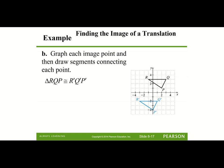Here you can see the image has been graphed. P prime at (0, −4) is right there. Q prime at (1, −2) — the vertex is right there. And R prime at (−3, −2) — you can see the vertex there.